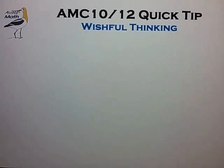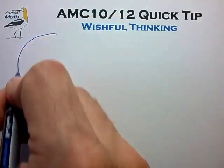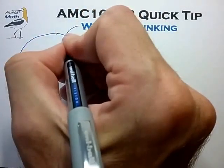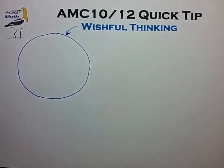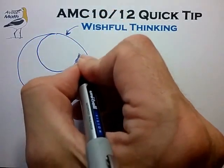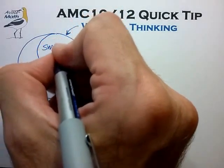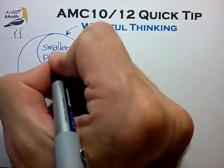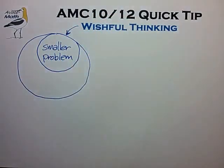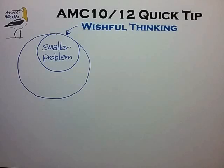I like to imagine wishful thinking as a set of methods. Inside the larger set I'll draw another circle to represent a subset of methods I like to describe as wishing for the smaller problem. This subset method has to do with looking at a problem and trying to identify parts that seem unnecessarily large, and looking for opportunities to insert smaller numbers to get the problem started and find insights to solving the larger problem.